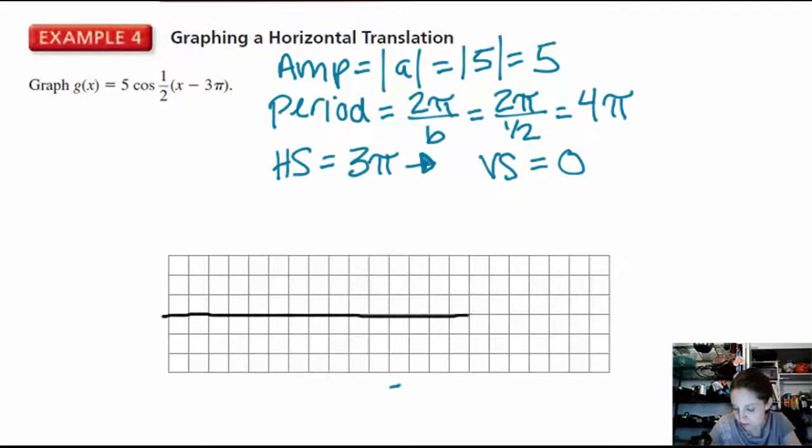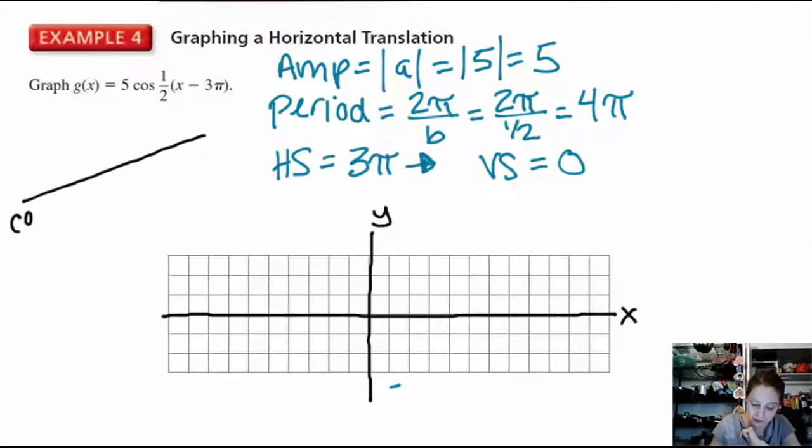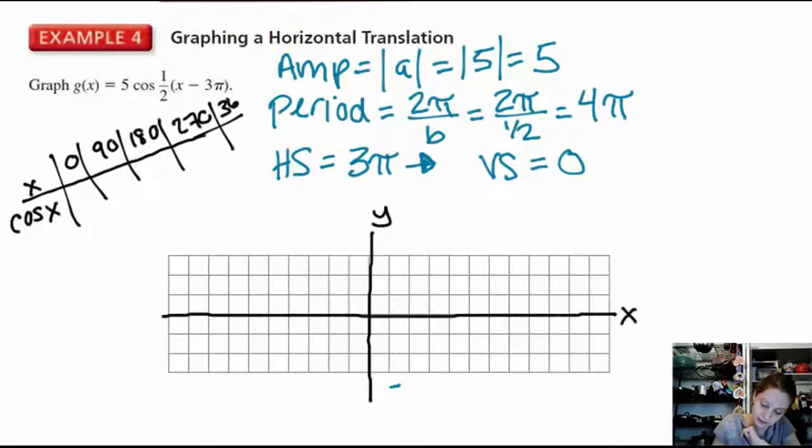So, I'm going to start to put the axes in. We begin by step 2 is the midline. Draw the horizontal line y equals k, which is the midline. Well, that's the x-axis, I don't need to draw it. Now, I need to find the 5 key points, and to find the 5 key points, I draw my parent function, cosine of x, at the values 0, 90, 180, 270, 360. This will remind me how the cycle of cosine goes.